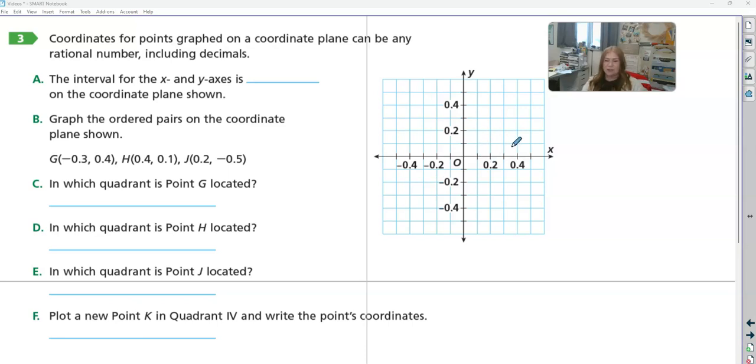Coordinate planes do not always have to have whole numbers. Sometimes they can have fractions and decimals, those rational numbers. So we can see this one has decimals. Here's 0.2, here's 0.4, so right in between 0 and 0.2. Here's 1 tenth, 2 tenths, 3 tenths, 4 tenths. These are just counting by tenths instead of whole numbers, but we follow the same rules. X goes over, y goes up and down. We have to go in that order.